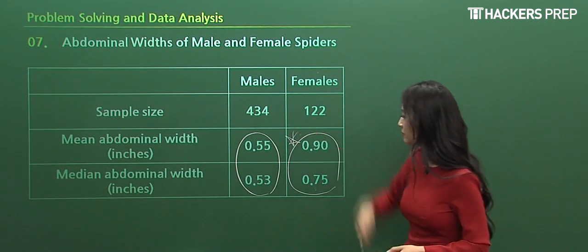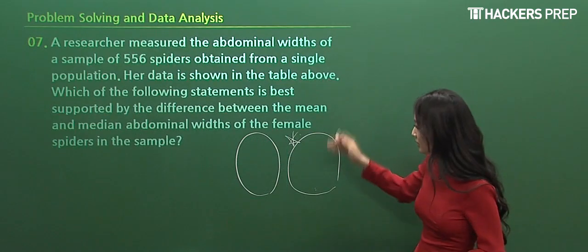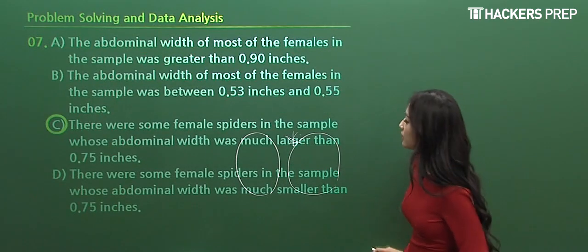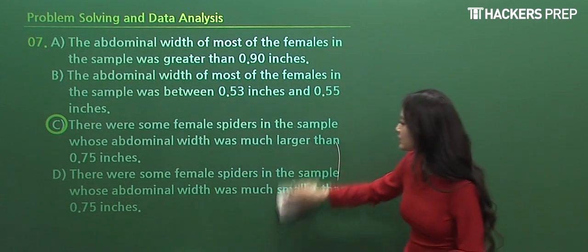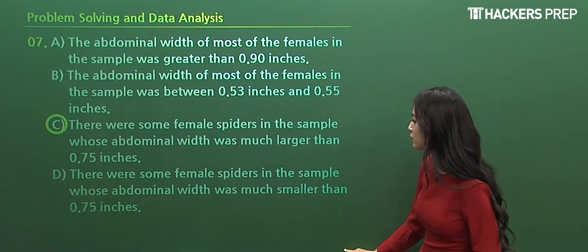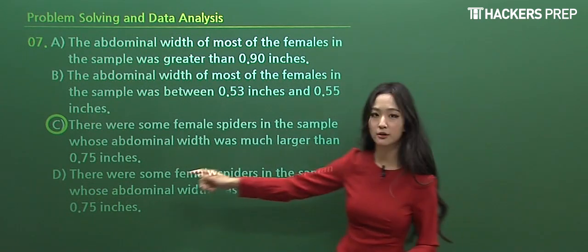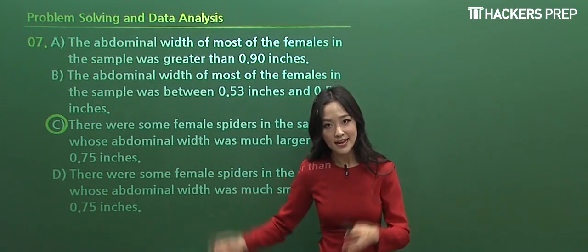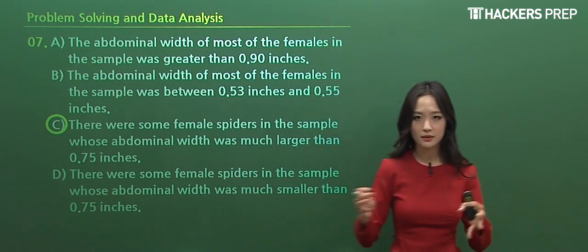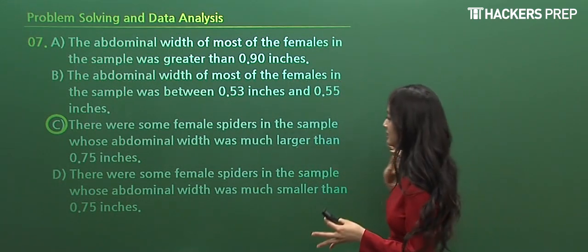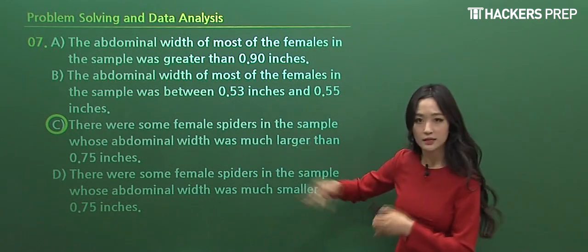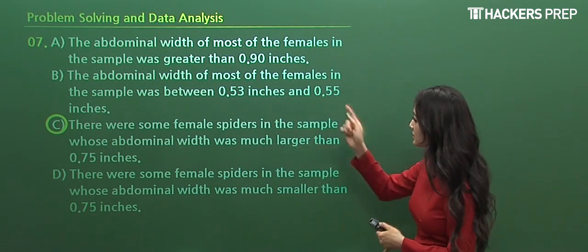When we look at the answer choices, we can see that C, there were some female spiders whose abdominal width was much larger than 0.75. That's how we can apply the concepts of data analysis into this particular example. Let's as a practice go through the other answer choices.